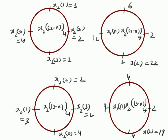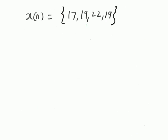We shift by one more step to get x(2) and x(3). Basically, the idea is to shift, multiply, and add. Hence the circular convolution of the sequences one, two, three, one and four, three, two, two is given by {17, 19, 22, 19}. Thanks for watching.